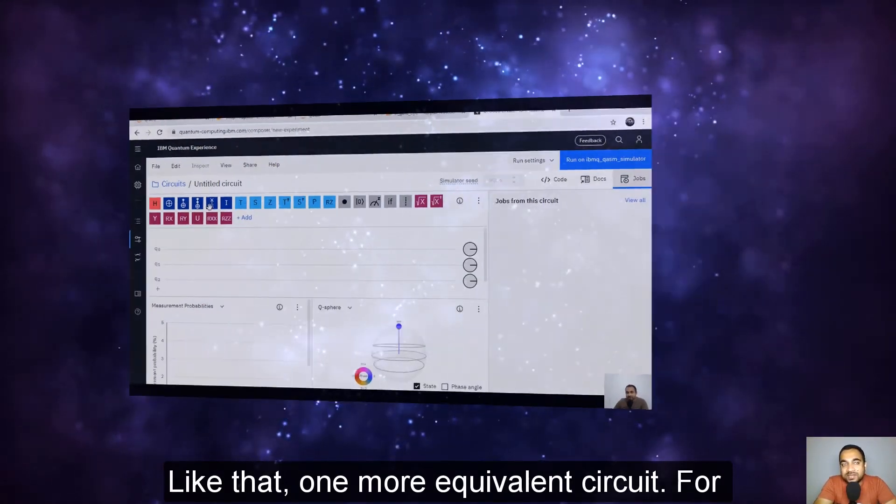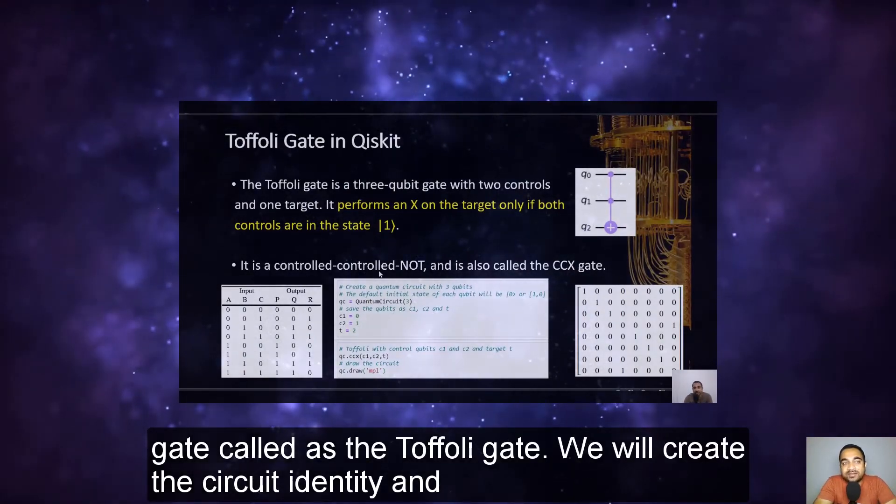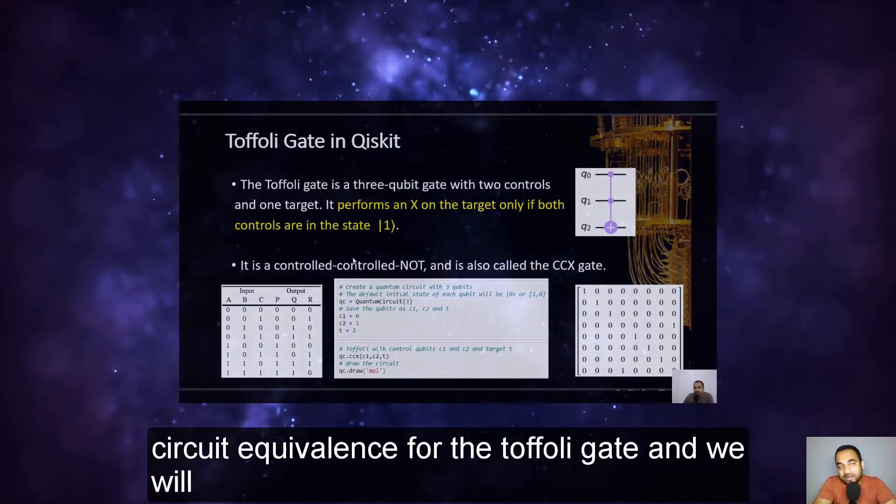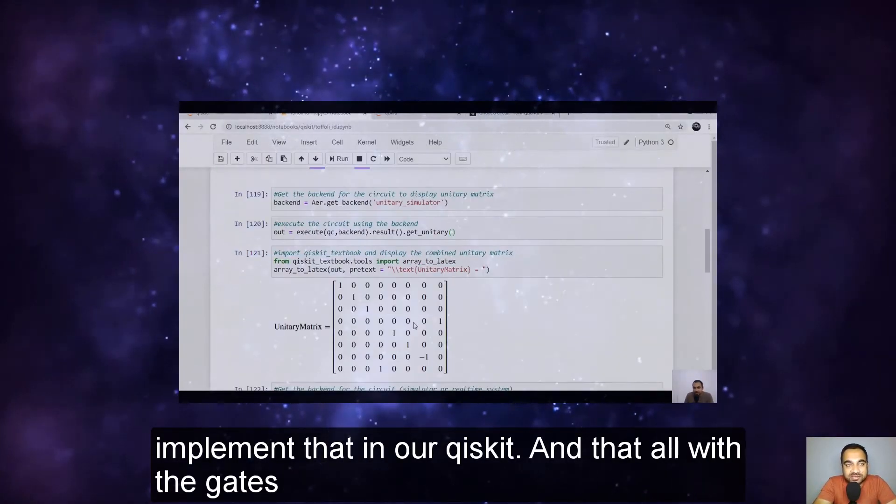Like that, one more equivalent circuit for gate called the Toffoli gate. We will create the circuit identity and circuit equivalence for the Toffoli gate and we will implement that in our Qiskit.